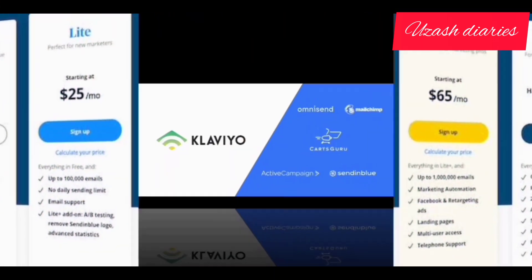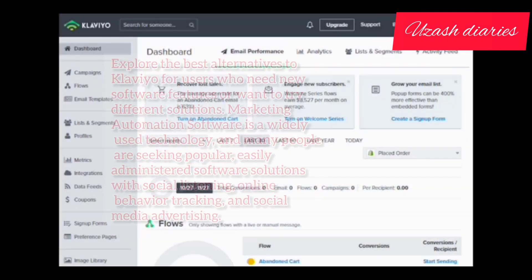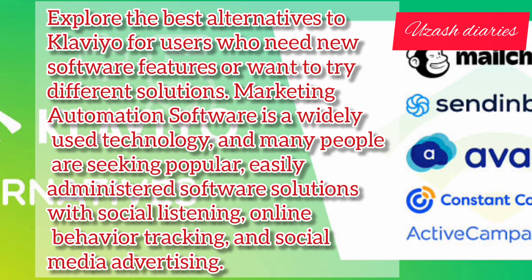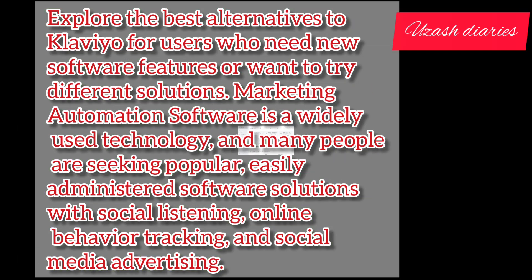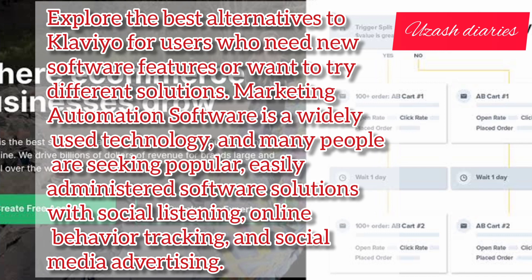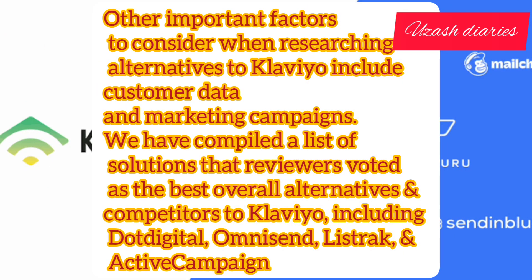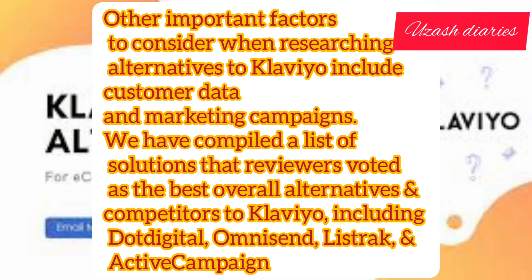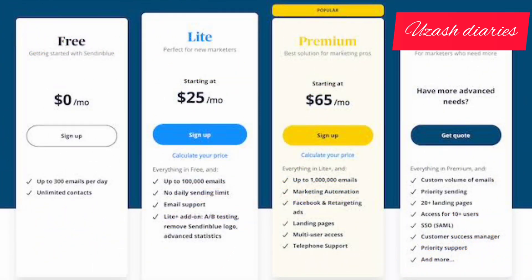Let me explain more briefly. We can explore the best alternatives to Klaviyo for users who need new software features or want to try different solutions. Marketing automation software is a widely used technology, and many people are seeking software solutions with social listening, online behavior tracking, and social media advertising. Other important factors include customer data and marketing campaigns. Top alternatives include Dot Digital, Omnisend, Listrak, and Active Campaign.